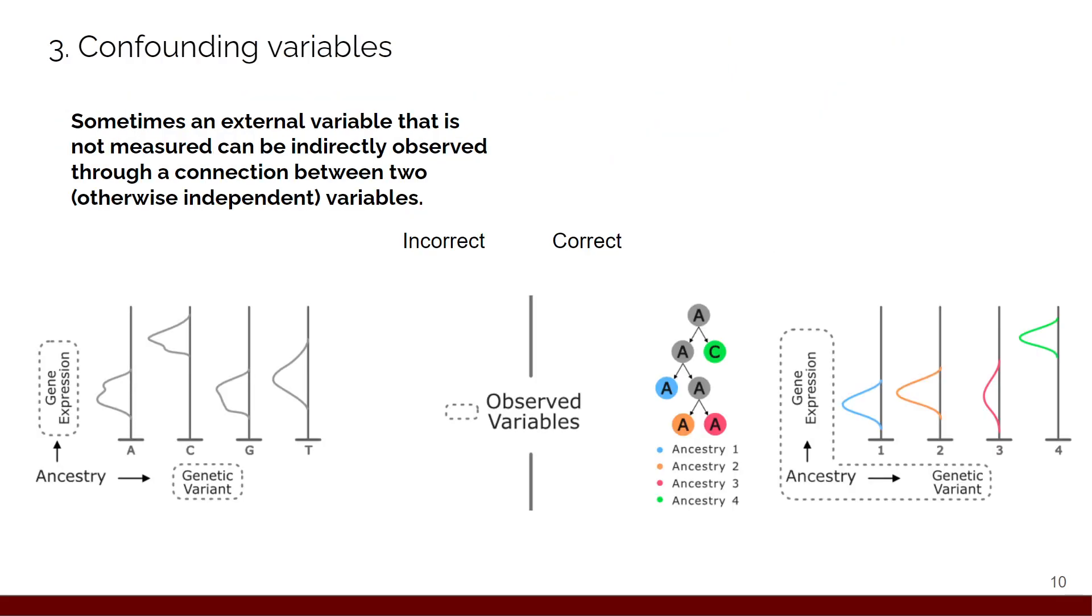The third pitfall we identified are confounding variables. This is a particularly difficult pitfall to diagnose and specifically to account for. The idea is basically that sometimes there's an external variable that you haven't measured that induces a relationship between two observed variables. For instance, imagine that you have a genetic variant that seems to quite clearly cause an increase in gene expression. You can see on the left-hand side here that when you have a C at a position, you observe much higher gene expression than any of the other variants. But you can't figure out how that variant biologically causes an increase in gene expression. It's not in a promoter, it's not in an enhancer, it's not in a transcription factor binding site or anything like that. It's just totally random.